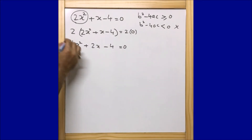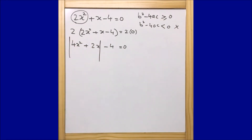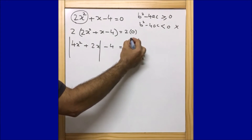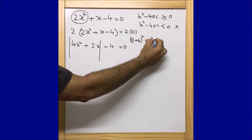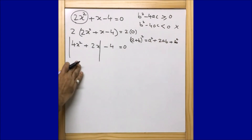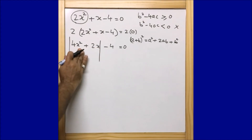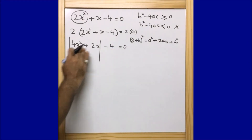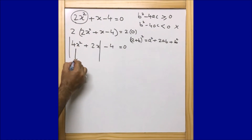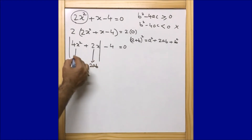Now the main game starts. Let us keep the -8 aside and focus on 4x² + 2x. Our aim is to make this into the form (a + b)² = a² + 2ab + b². Here 4x² corresponds to a², and 2x corresponds to 2ab. We need to find b².